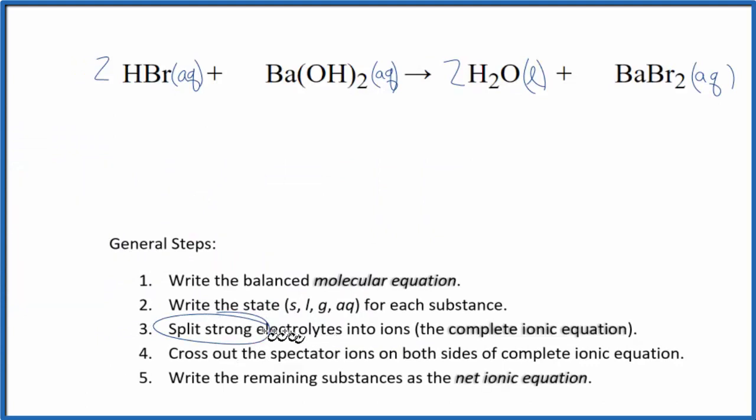Next, we need to split the strong electrolytes into their ions, which will give us the complete ionic equation. Hydrogen, group 1, has a 1 plus charge. Bromine has a 1 minus. So I have two hydrogen ions, 2H⁺. I'll write aqueous at the end. And then two bromide ions, Br⁻.